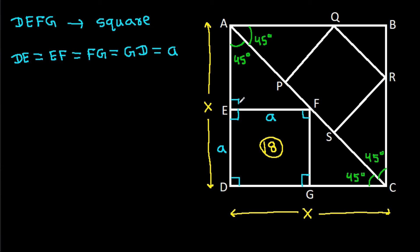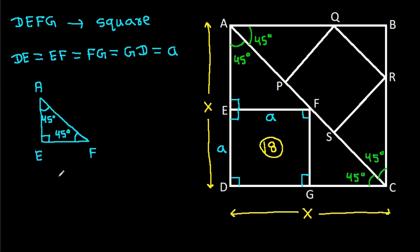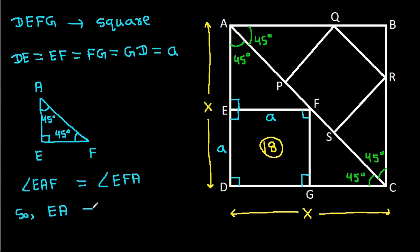So this angle is 90 degrees. Looking at triangle AEF, this angle is 90 degrees and this angle is 45 degrees, so this angle will also be 45 degrees. Since angle EAF equals angle EFA, that means EA will be equal to EF. And since EF is A, EA will also be A.